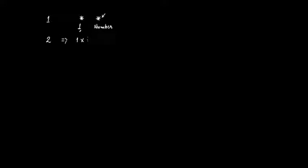Take 2 as an example. Is 2 a prime number? Of course 2 is a prime number. You can write 2 as 1 multiplied by 2. So 1 is one factor and 2 is another factor. There are no other factors other than 1 and 2 for the number 2. Therefore 2 is a prime number.